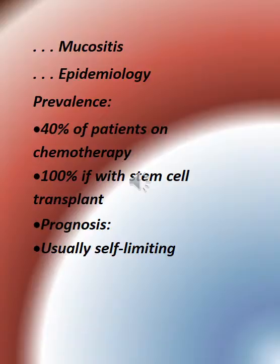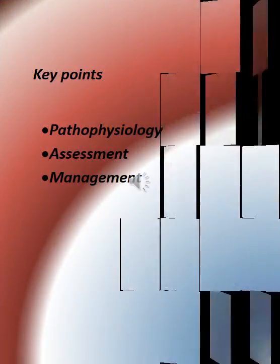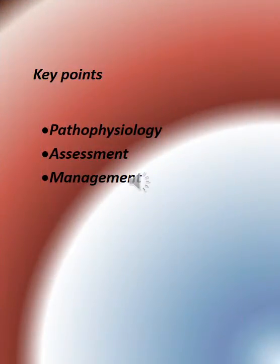Mucositis epidemiology and prevalence: affects 40% of patients on chemotherapy, and 100% of patients undergoing stem cell transplant. Prognosis is usually self-limiting. Key points cover pathophysiology, assessment, and management.